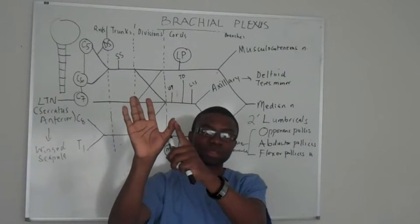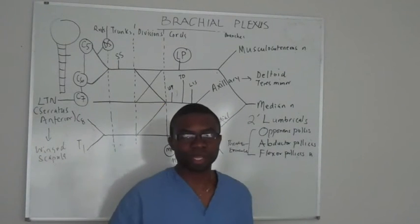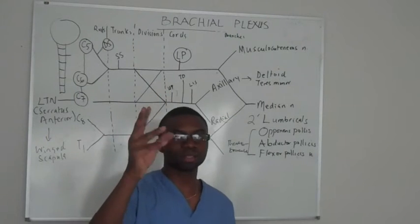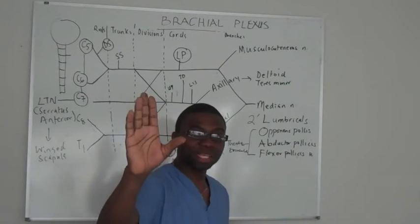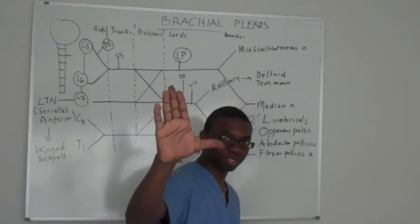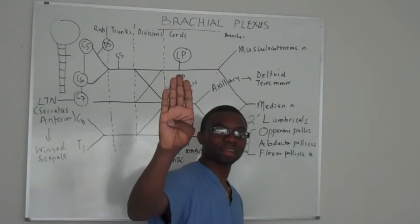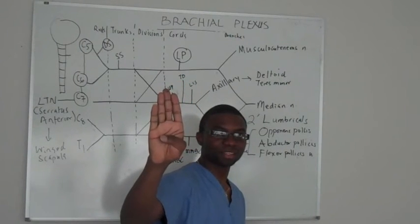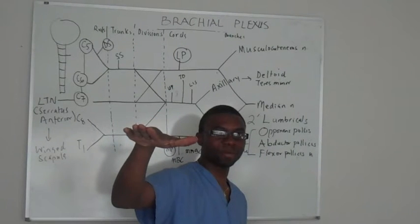You literally have to take your thumb and go over and meet your tiny little pinky. That's what makes us better than monkeys — because monkeys can't oppose. Abductor pollicis allows you to abduct your thumb. And if you want to flex it, this is flexion — actually this is adduction and abduction.